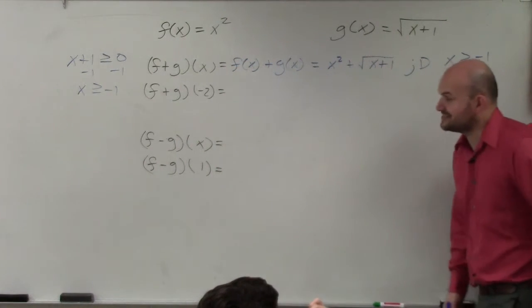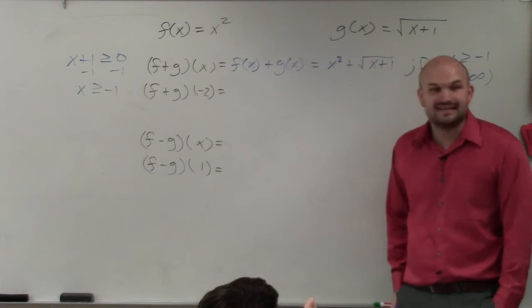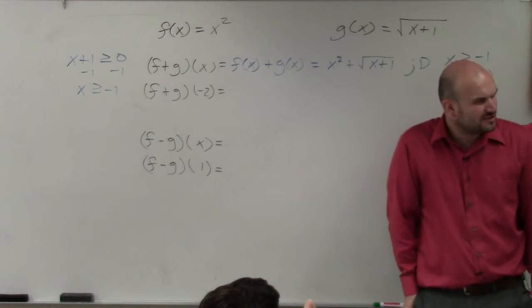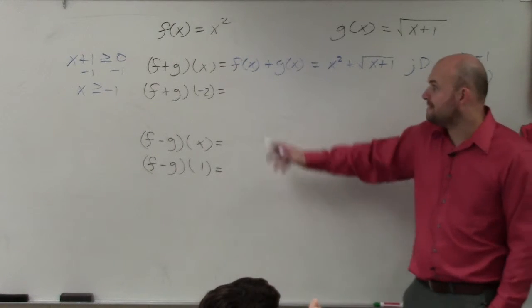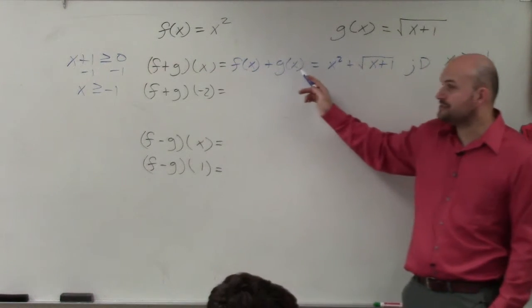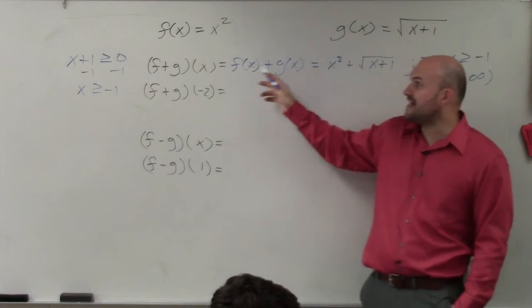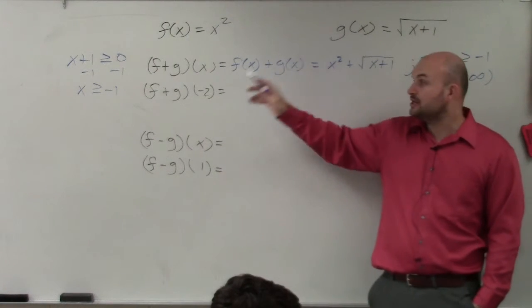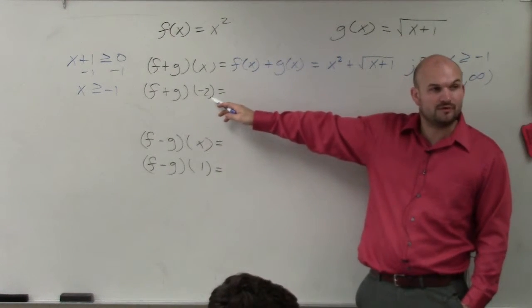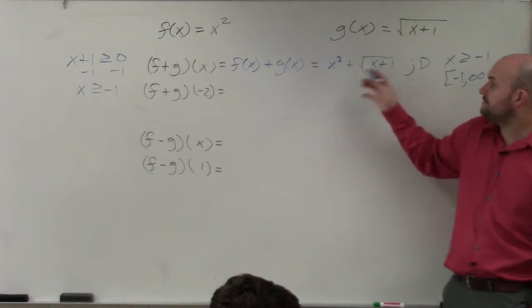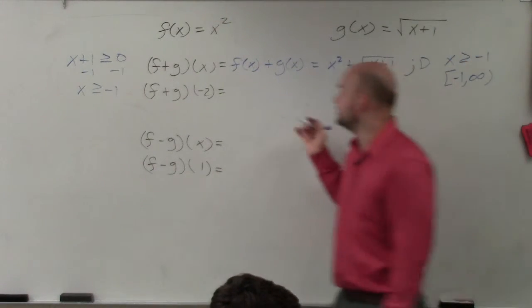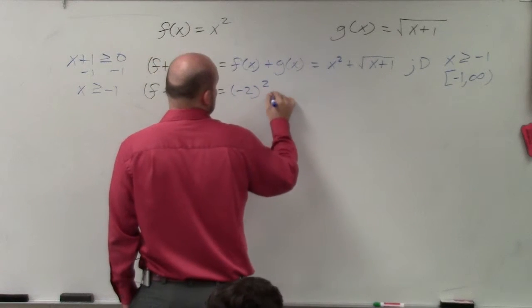Now, let's get into the next one. The next one says f plus g, and then evaluate for negative 2. So there's a couple of different ways you guys can do this. Basically, all they're asking to do is add the two functions, and then instead of evaluating for the input of x, you're going to evaluate for the input of negative 2. Well, if you already have them added, all you simply need to do is just plug in negative 2.